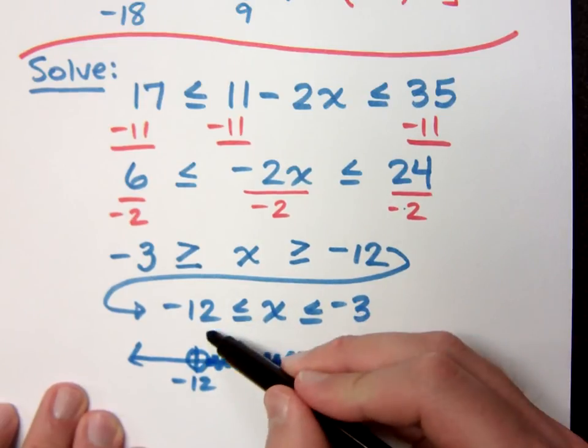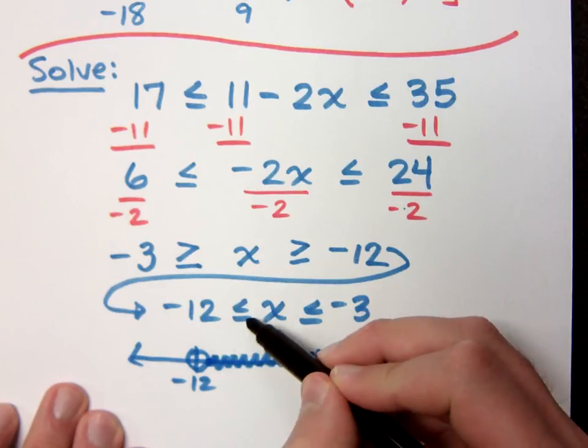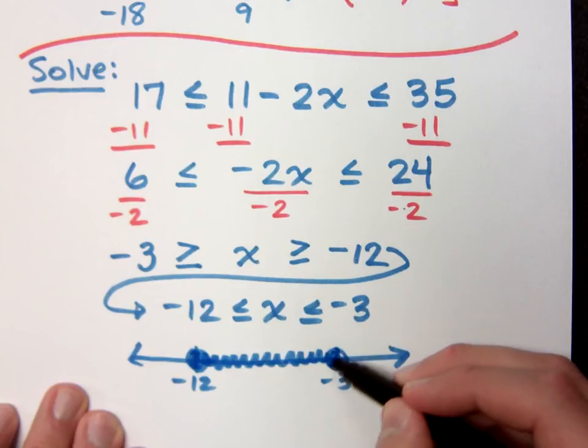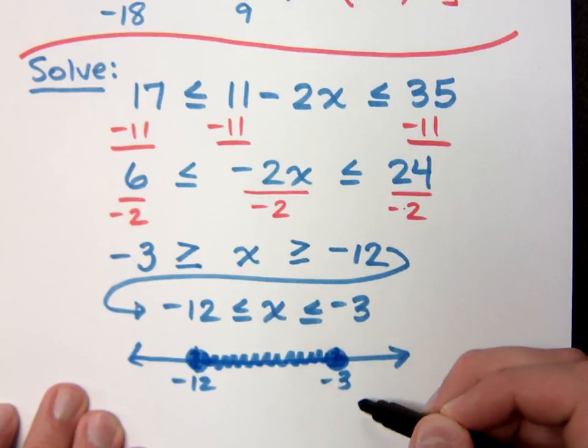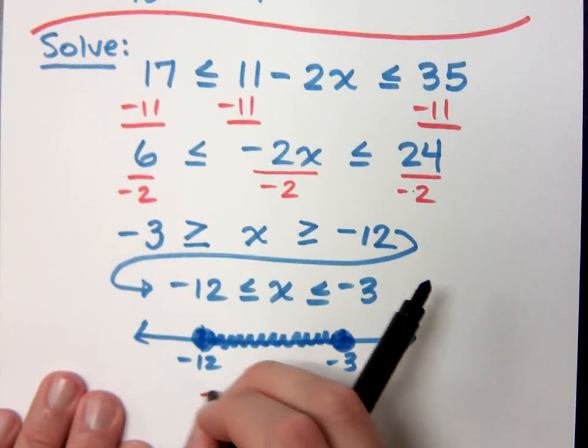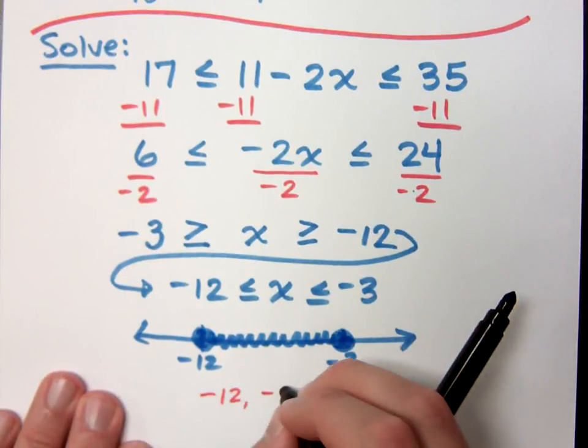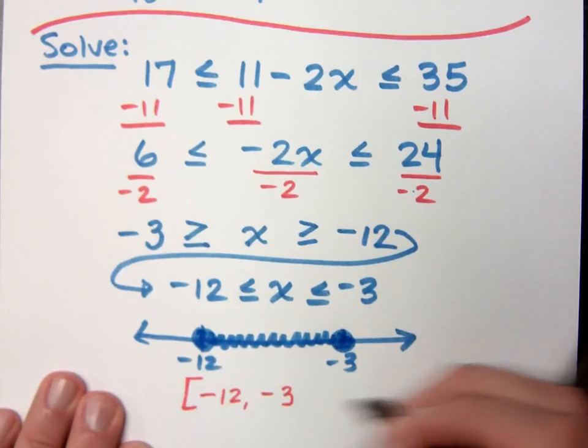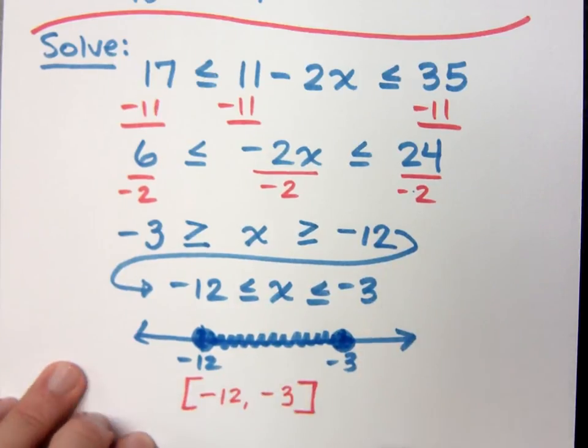Am I including the negative 12 with the equal sign? That tells me yes, I am including this. And I am including the negative 3 because of the equal sign. And then finally, if I write the interval notation here, it's going from negative 12 to negative 3. And since I am including both of these, I will have a bracket on both of those guys as well.